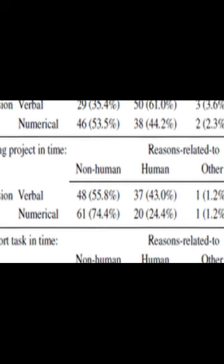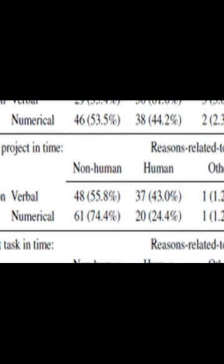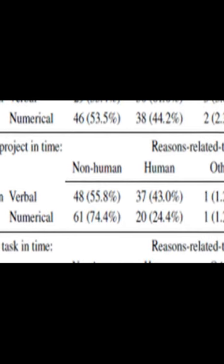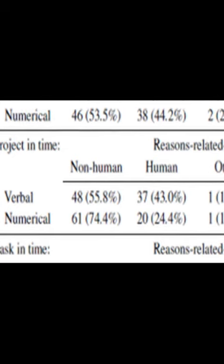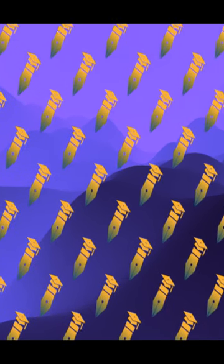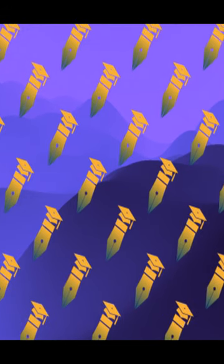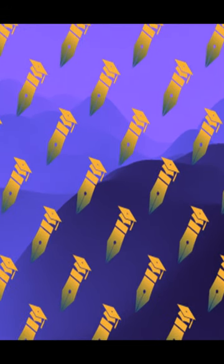This association holds even if the subject is given specific information about the event, or if they are asked to make their own prediction. Additionally, this association persists even if the subject is asked to respond using a forced choice response pattern, or if they are allowed to freely respond.